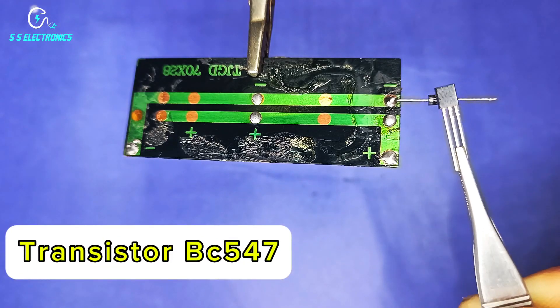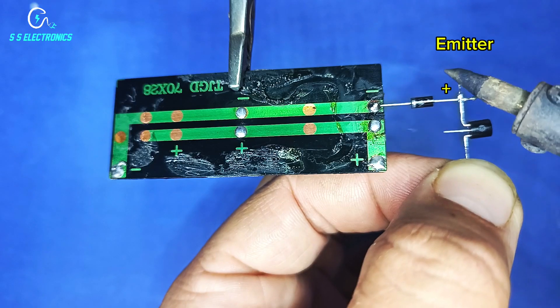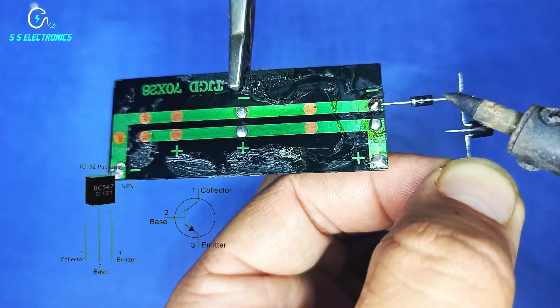Transistor BC547. Transistor emitter pin connecting with diode positive side.